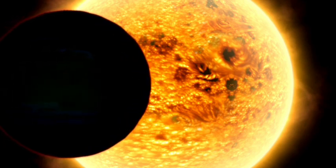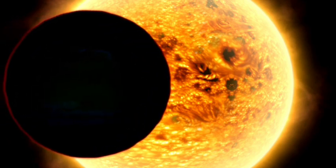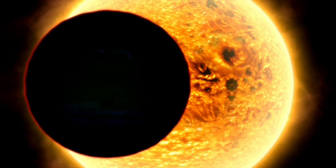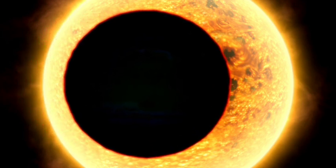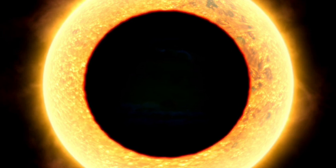Planets around other stars have been detected before, but usually indirectly by looking for clues, like the wobbling motion of a star as a planet orbits it, or a star getting dimmer as a planet passes in front of it.